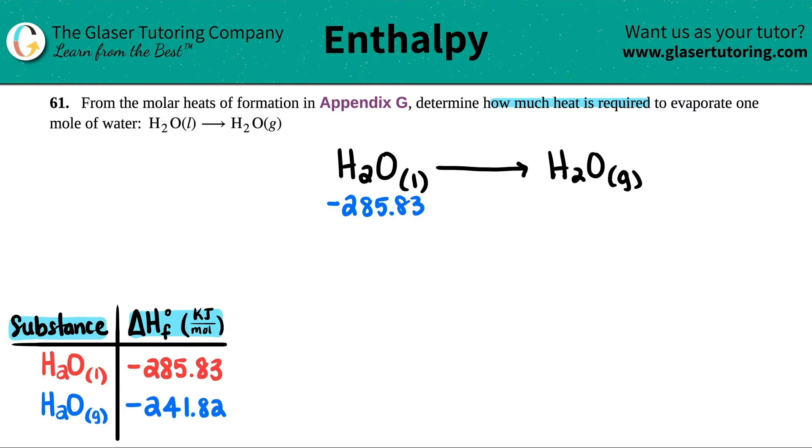So I have negative 285.83 kilojoules per mole for the water, and then for the steam I have negative 241.82.